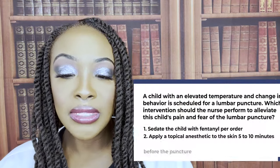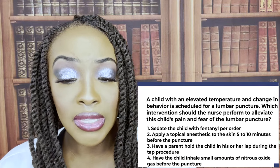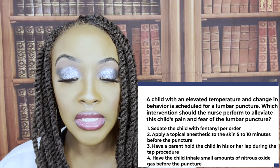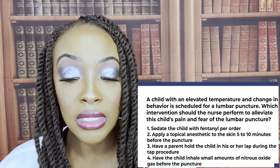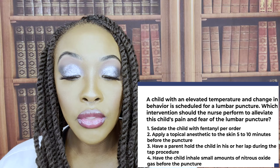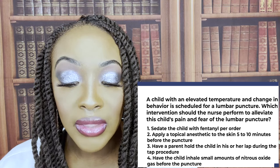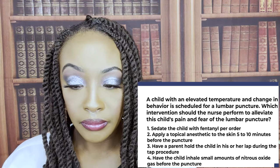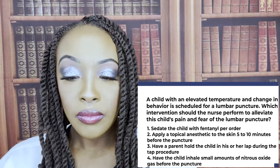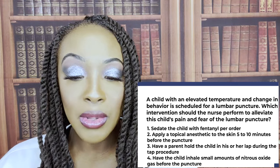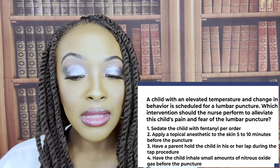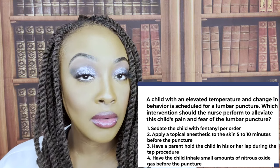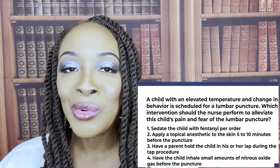A child with an elevated temperature and change in behavior is scheduled for a lumbar puncture. Which intervention should the nurse perform to alleviate the child's pain and fear? One: sedate the child with fentanyl per order. Two: apply a topical anesthetic 5 to 10 minutes before the puncture. Three: have the parent hold the child in his or her lap during the procedure. Or four: have the child inhale small amounts of nitrous oxide before the puncture. Number one is the correct answer — if the child is sedated, how are they going to have pain and fear?